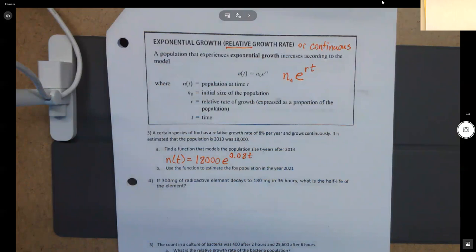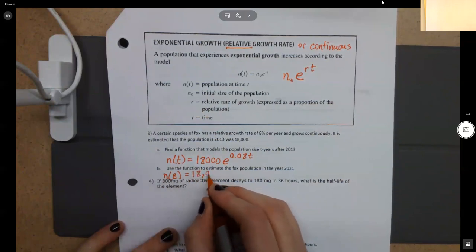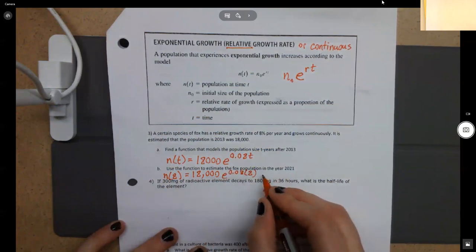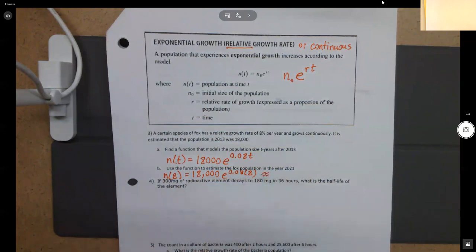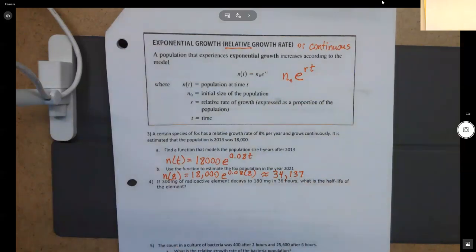So the next question wants us to estimate the fox population in the year 2021. So what we're going to be doing is that we're going to be plugging a number in for T, and what number are we going to be plugging in for our T value? You guys didn't fall for it. I've had so many people plug in 2021. So we're going to plug in eight because that's the number of years since 2013. So we're going to have 18,000 E raised to the 0.08 times eight. And if we plug that into our calculator, roughly what we would expect the population to be would be 34,137 rounding.